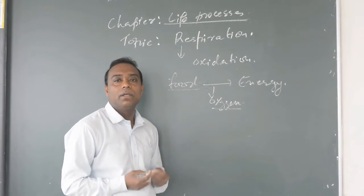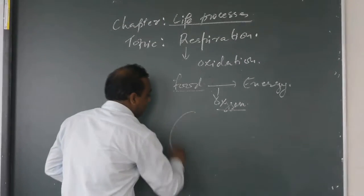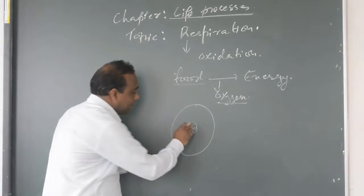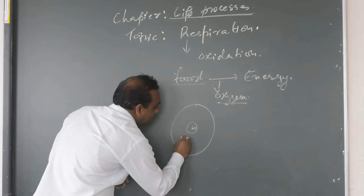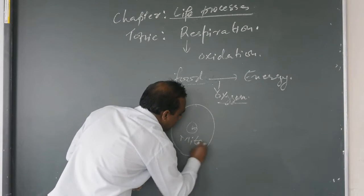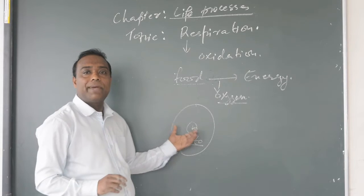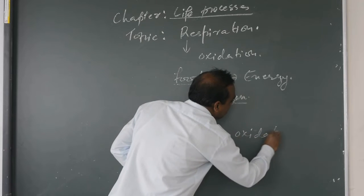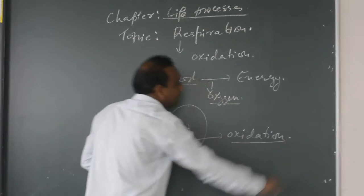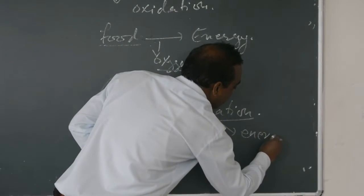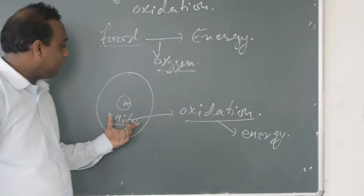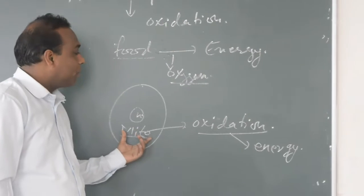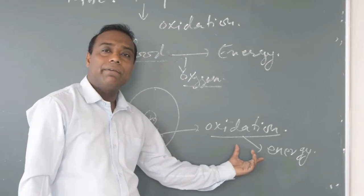Each and every cell of the body gets oxygen. In our cell, there is a nucleus, and inside the cell there is one organelle that is known as mitochondria. In the mitochondria, oxidation of the food takes place, and after oxidation, they release energy. That's why the mitochondria is called the powerhouse of the cell.